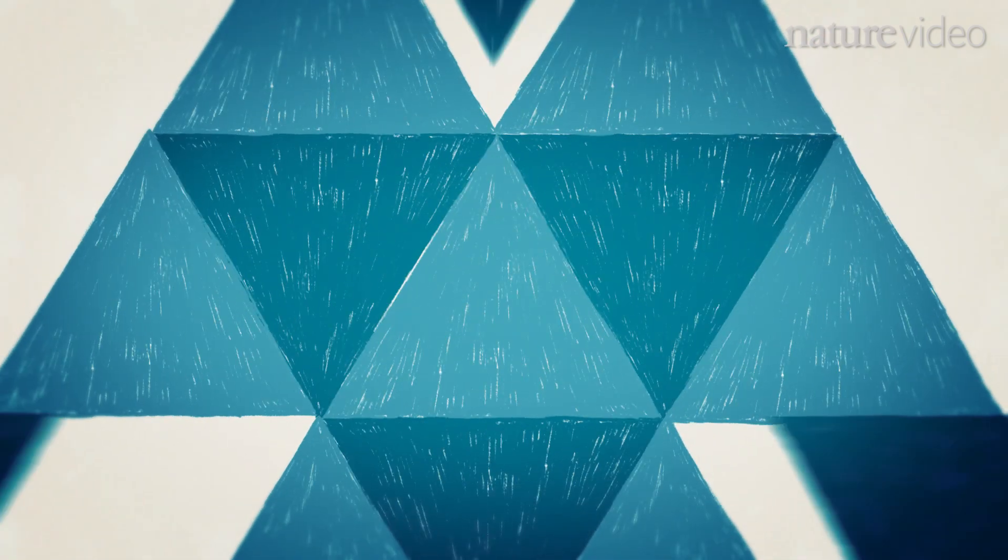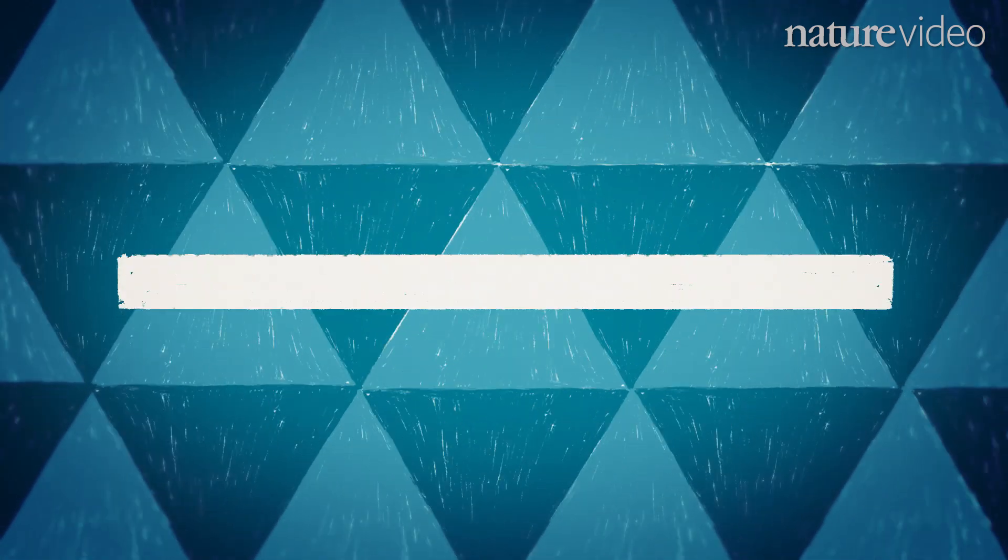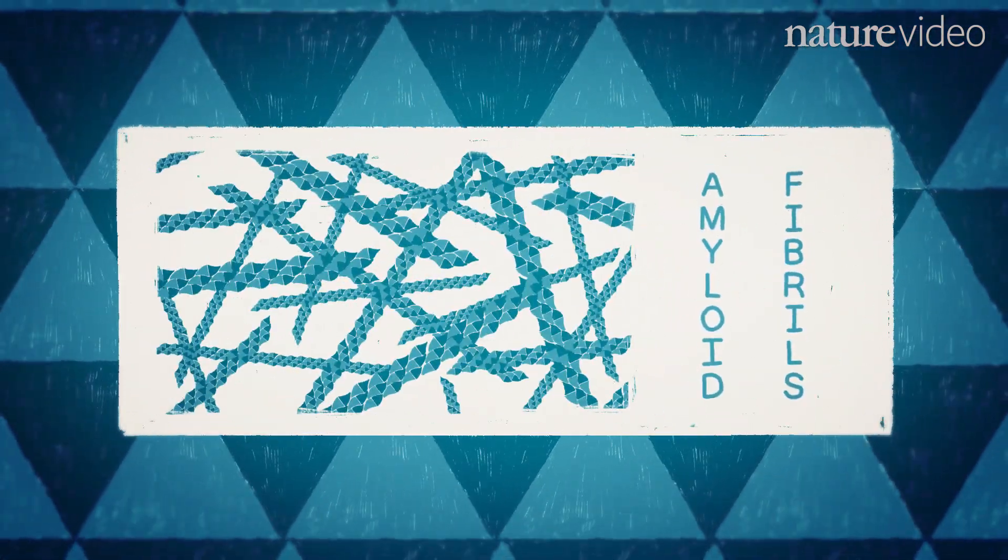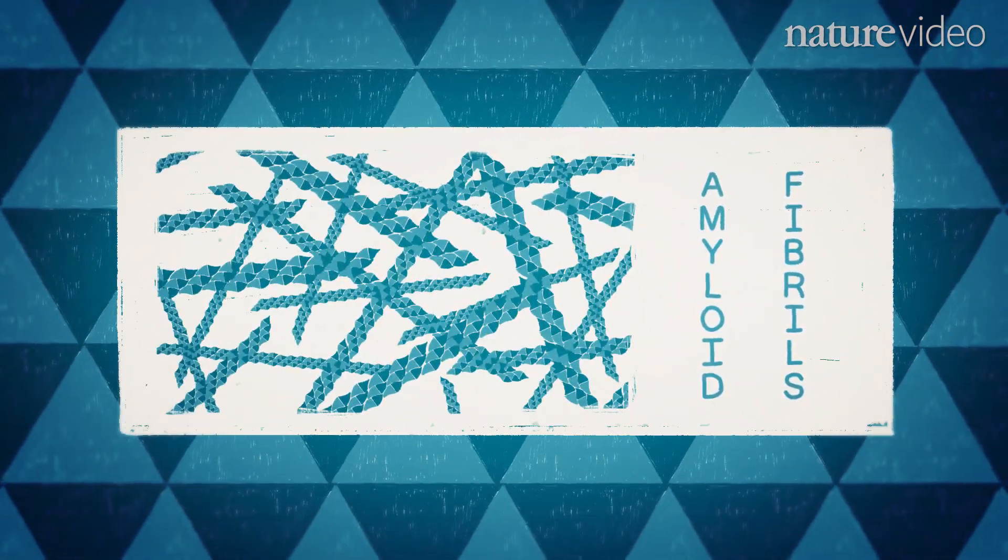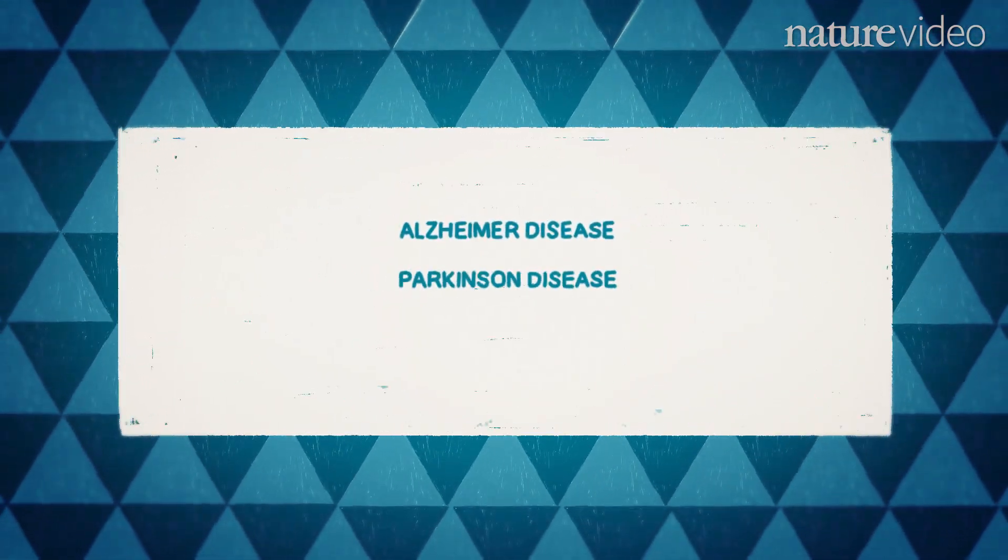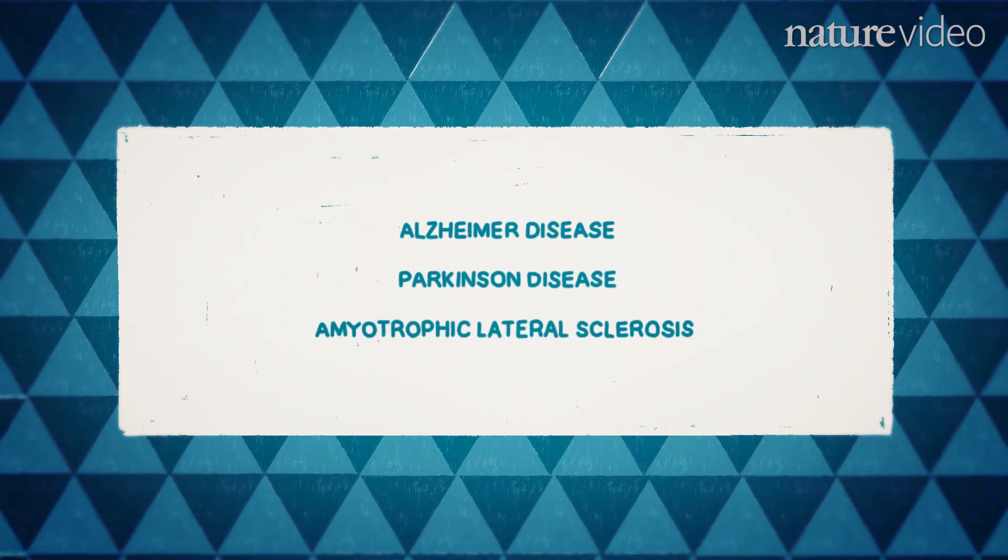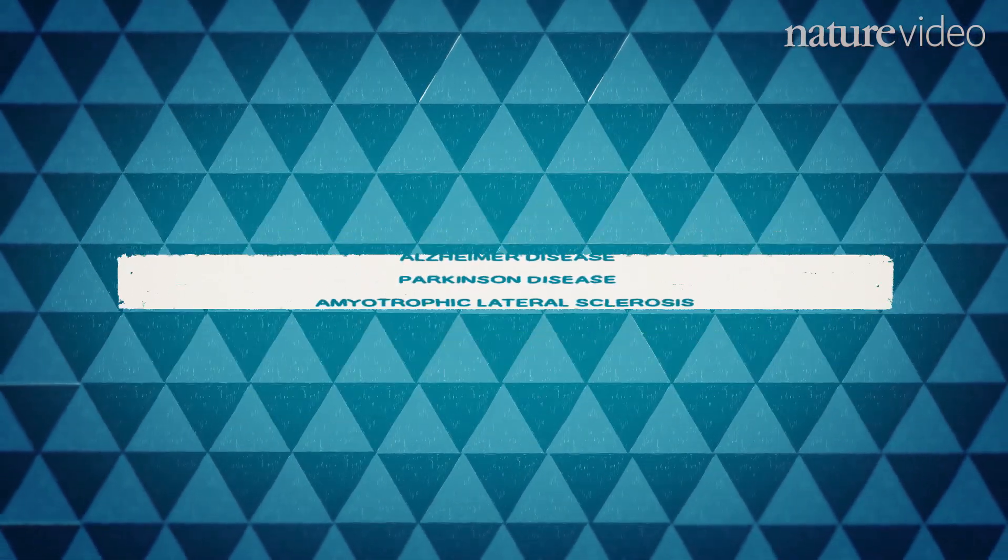However HTT exon 1 can form aggregates including tangles of amyloid fibrils. Similar aggregates are also present in other neurodegenerative diseases including Alzheimer disease, Parkinson disease and amyotrophic lateral sclerosis or ALS.